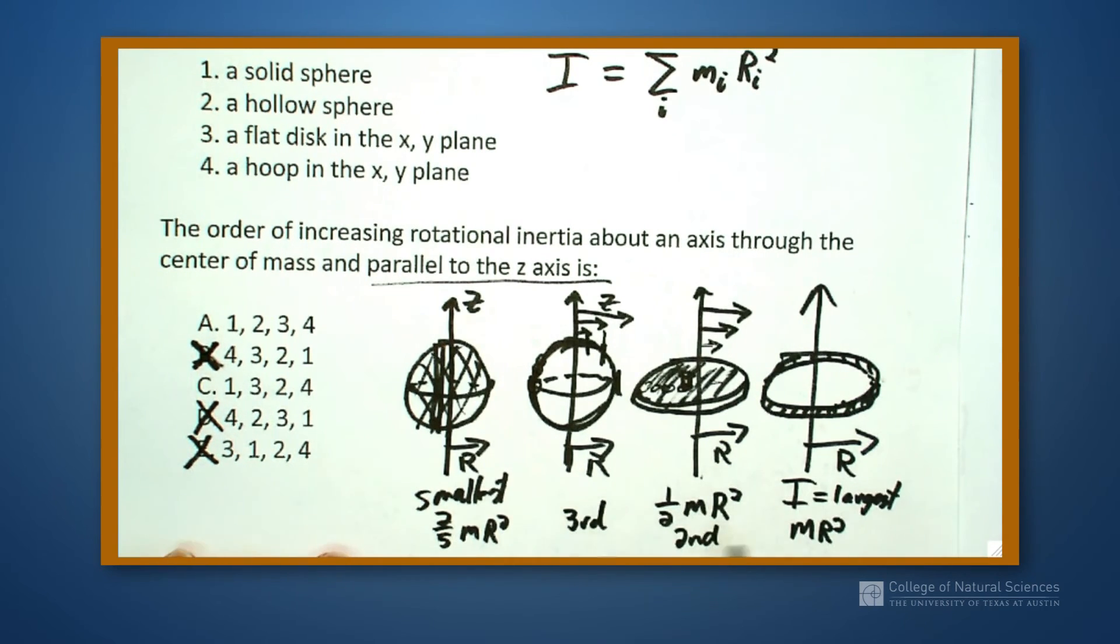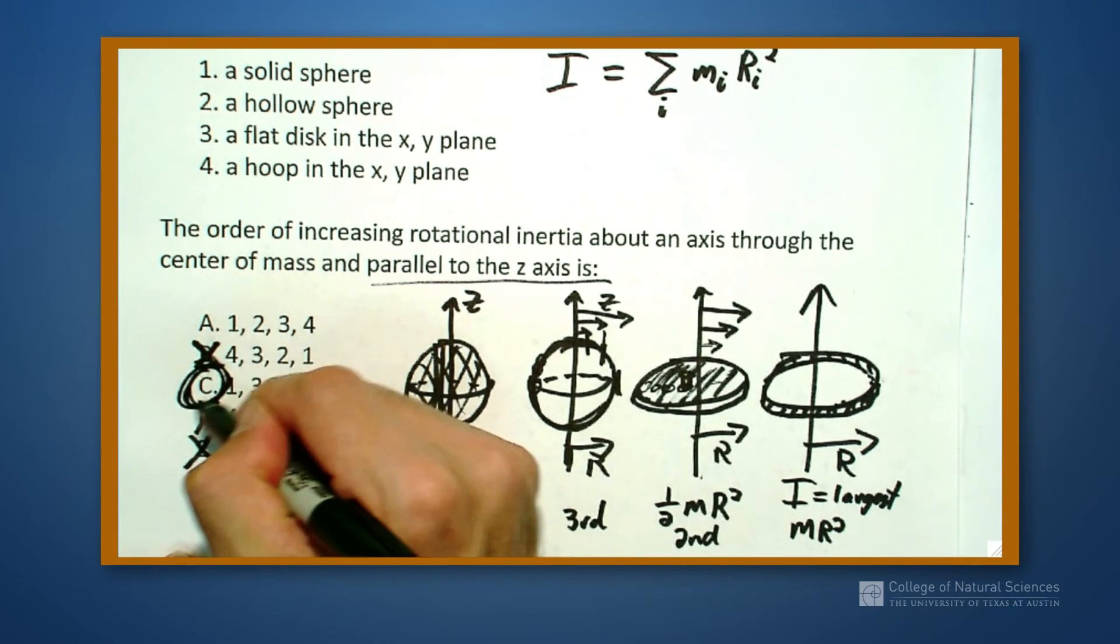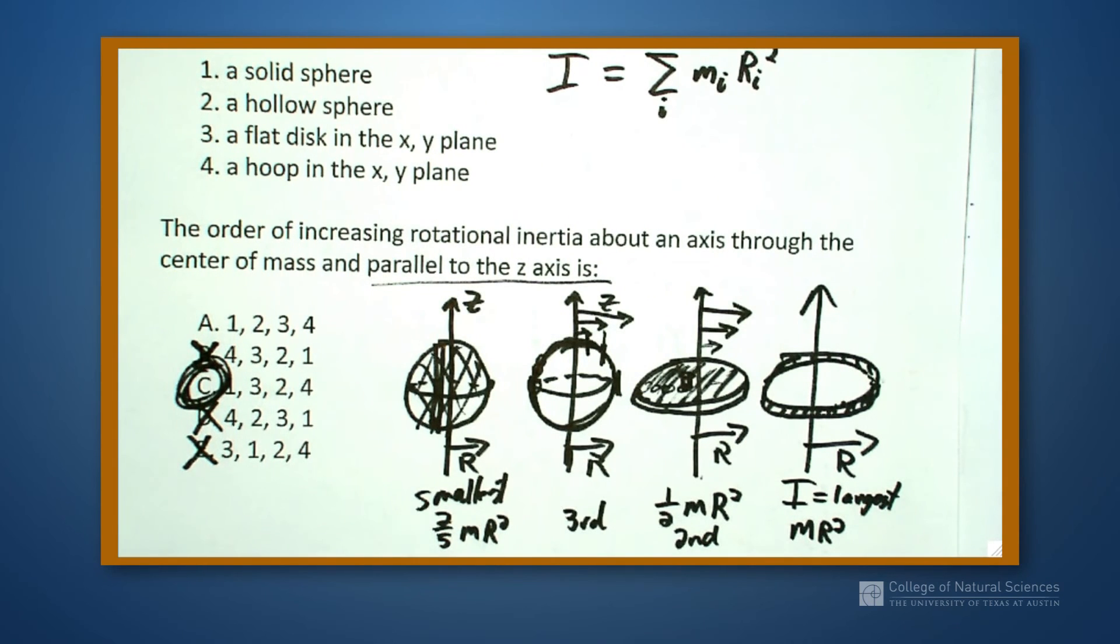So when I look at my answers, I have the smallest is one. I have one, three, two, four. So my choice C is the right answer.